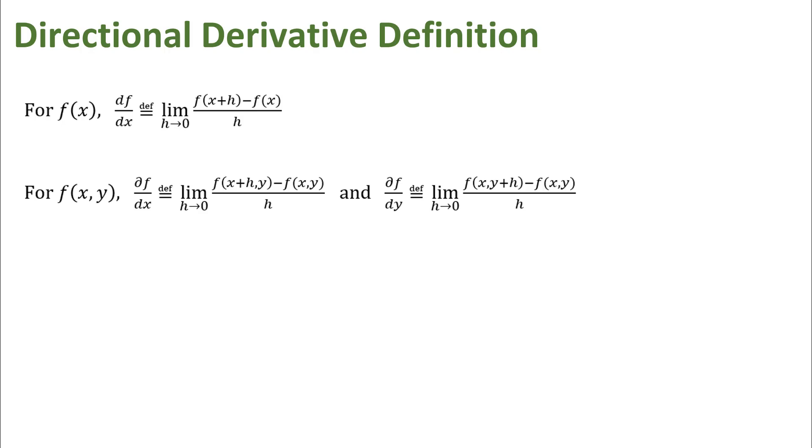You remember what that represents. You've got some function graph, you've got a point at x equals c, and then you have another point at x equals c plus h. This expression here represents the slope between those two points.